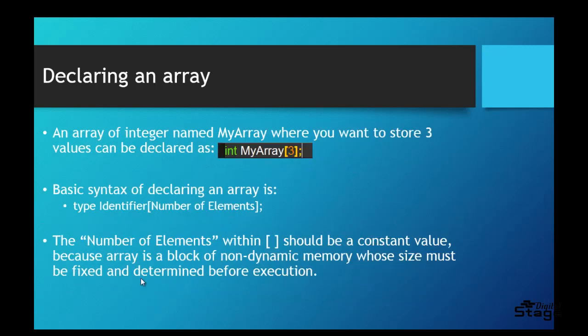How do you declare an array? If you want to declare an array of integers named my_array where you want to store three values, it can be declared like this: int my_array, and in the square braces you put three — three represents the number of elements you want to store.